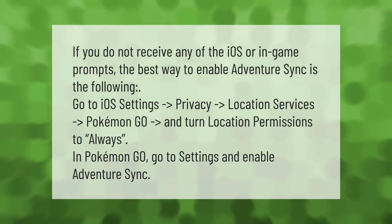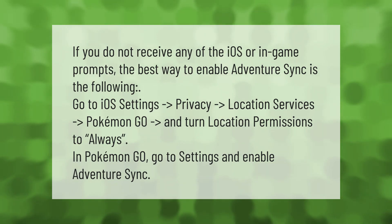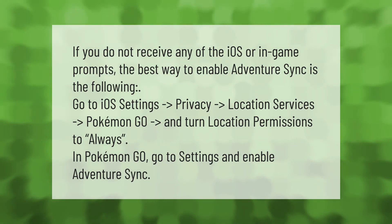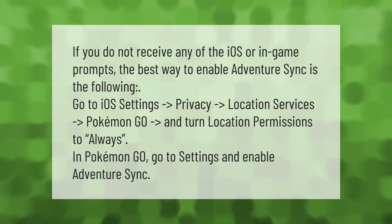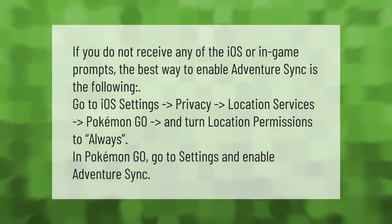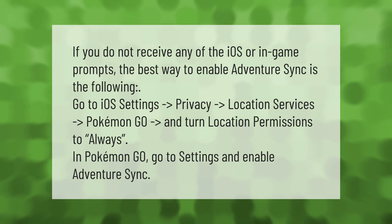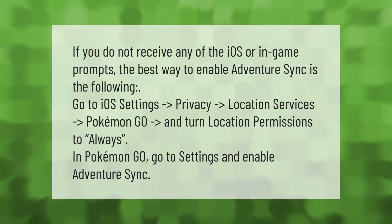If you do not receive any iOS or in-game prompts, enable Adventure Sync as follows: go to iOS Settings, then Privacy, then Location Services, then Pokémon GO, and turn location permissions to Always. Then in Pokémon GO, go to Settings and enable Adventure Sync.